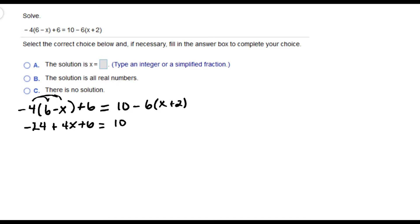On the right hand side of the equation, I'm going to distribute the negative 6 to the terms in the parentheses. That gives me negative 6x minus 12.